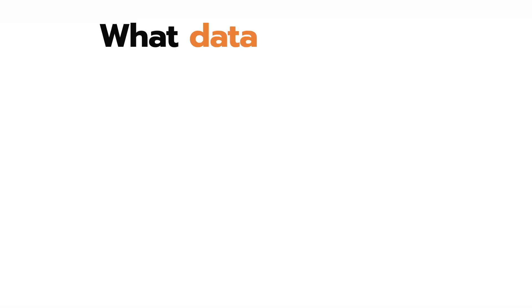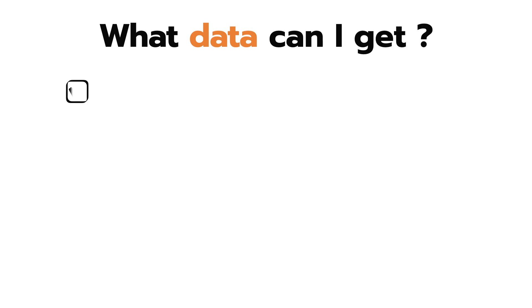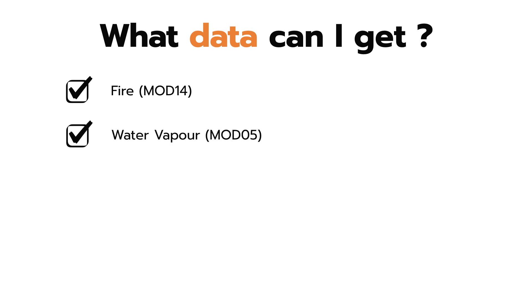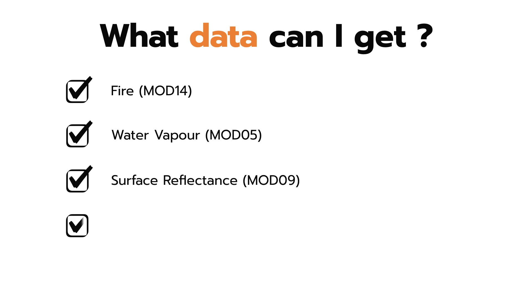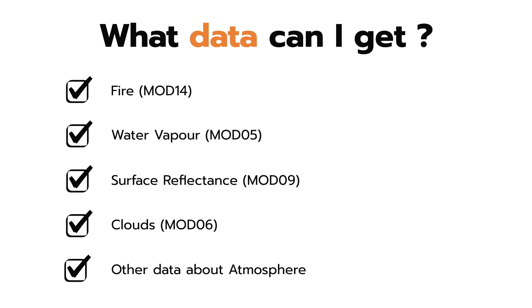What exactly can you get from EarthData? You can find aerosol data from MOD04, water vapor from MOD05, surface reflectance from MOD09, cloud data from MOD06, and other data about the atmosphere.